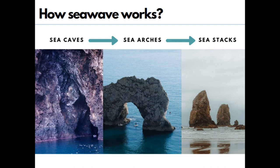Now let's see how sea waves work. Coastal landforms are created by the erosional and depositional activities of waves — they make beaches, stacks, sea caves, and arches. When sea waves hit rocks, cracks develop, and eventually water erodes the rock, resulting in a hollow like a cave. We call this a sea cave.